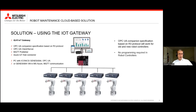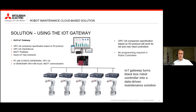We are supporting all our robot controllers — the old and the existing ones. The major point here is that this is a communication providing a solution without any modification or change in the robot controllers. So in a brownfield environment, we plug in that gateway and we can start reading the maintenance information directly from the robot controllers. That IoT gateway solution turns a black box robot controller into a data-driven maintenance solution.